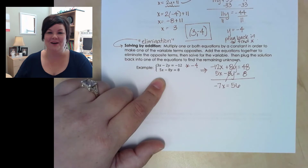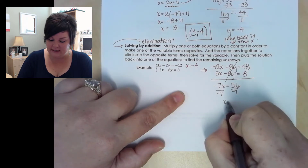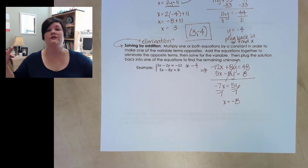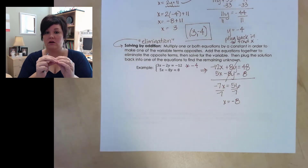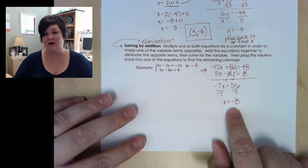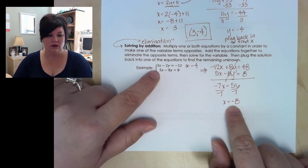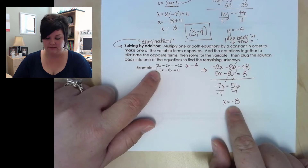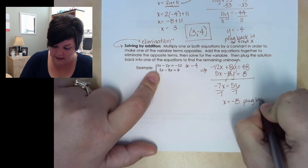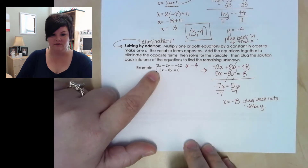Now this is a simple equation to solve. I just divide off negative 7, which gives x equals negative 8. Remember, this represents an ordered pair — a point on the graph where two lines cross. So now that I have x, I also need to find y. It doesn't matter which equation you plug back into — the first, second, or the modified ones. I'll pick the second one.